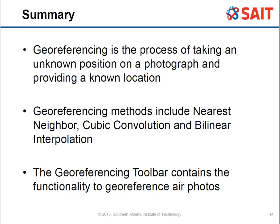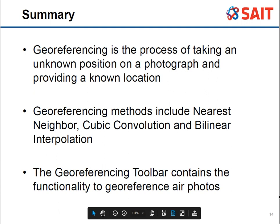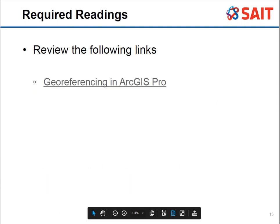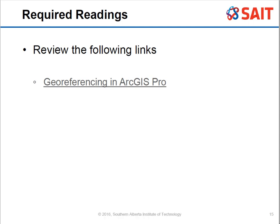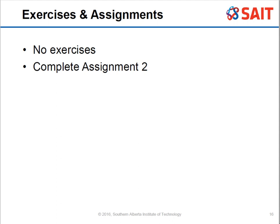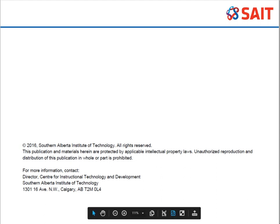Both cubic convolution and bilinear interpolation produce a weighted value rather than the actual pixel value, while nearest neighbor gives the exact value. However, nearest neighbor makes the image look pixelated, whereas cubic convolution and bilinear interpolation produce a much smoother, more natural-looking image. The geo-referencing toolbar in ArcGIS provides the functionality to do this, and ESRI's ArcGIS webpage walks you through the process. This content relates to Assignment 2.